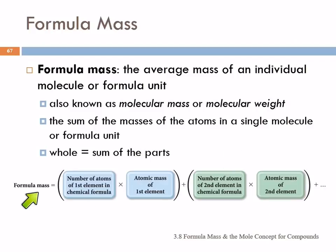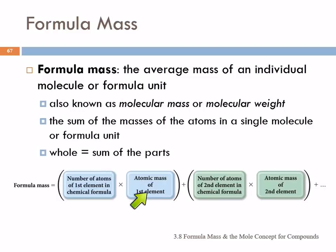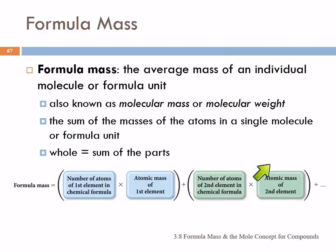In general form, we've got the number of atoms of the first element in the formula times the mass of the first element, plus the number of atoms of the second element times its mass. You just add them up like that and that'll give you the mass of the formula.